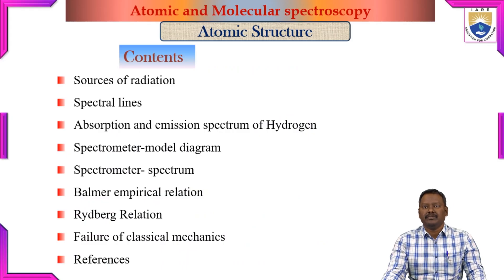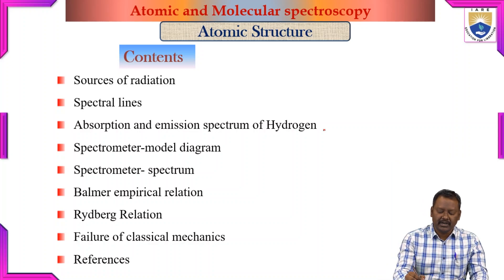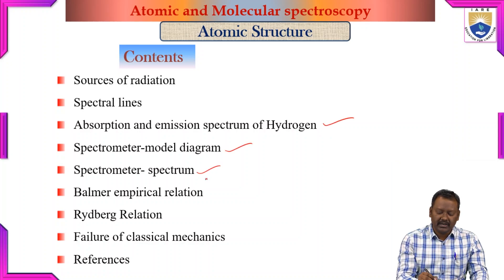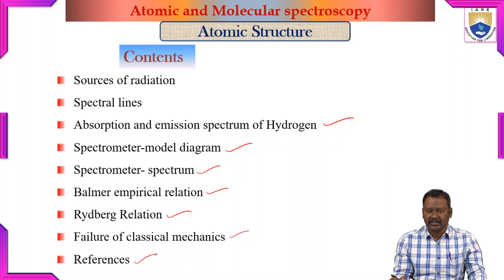The content of the present lecture are: sources of radiation, spectral lines, absorption and emission spectrum of hydrogen, spectrometer model diagram, spectrometer and spectrum, Balmer's empirical relation, Rydberg relation, failure of classical mechanics, and references.